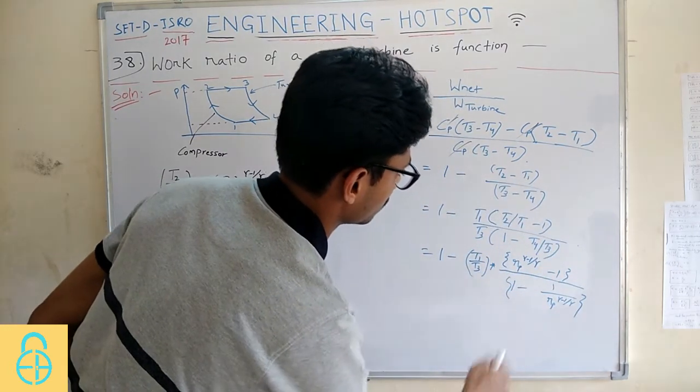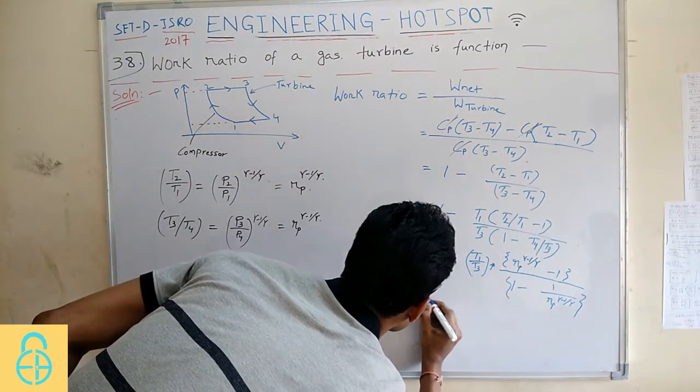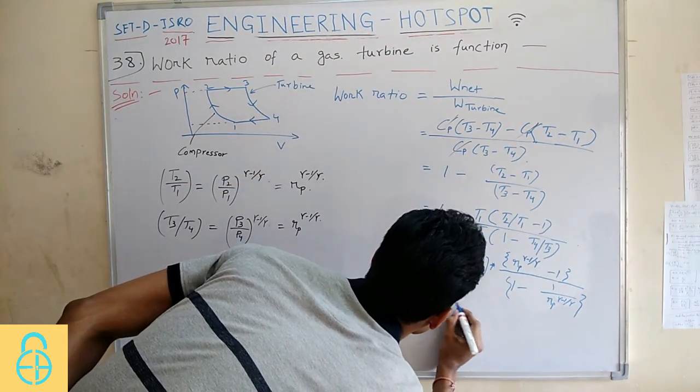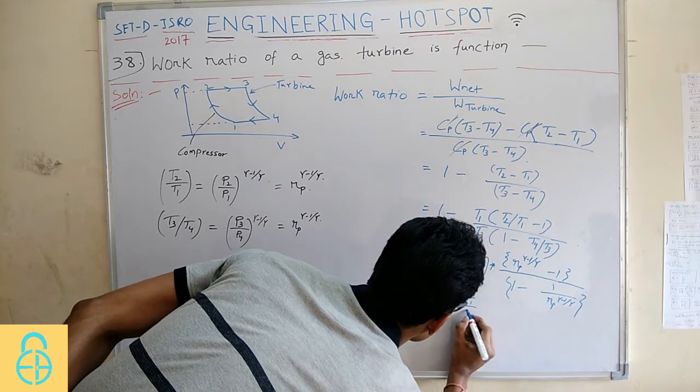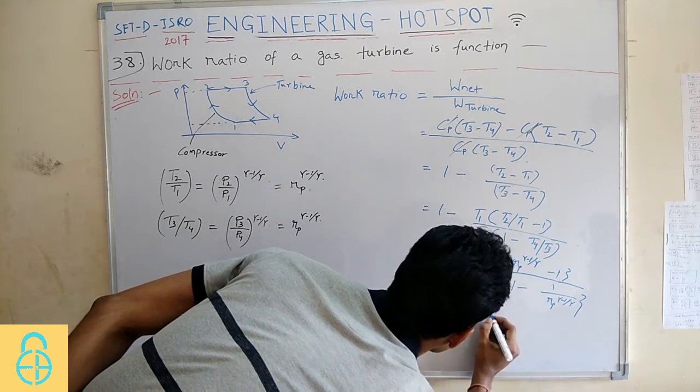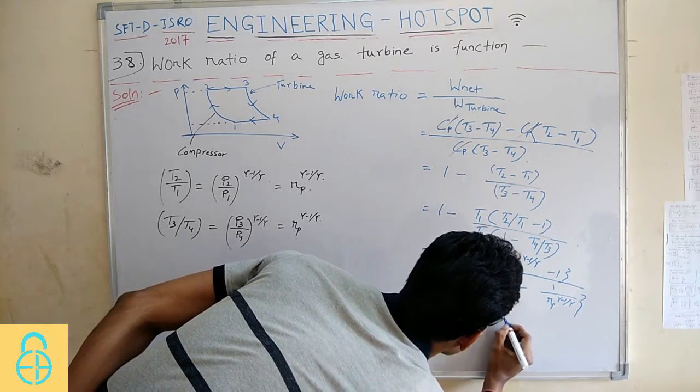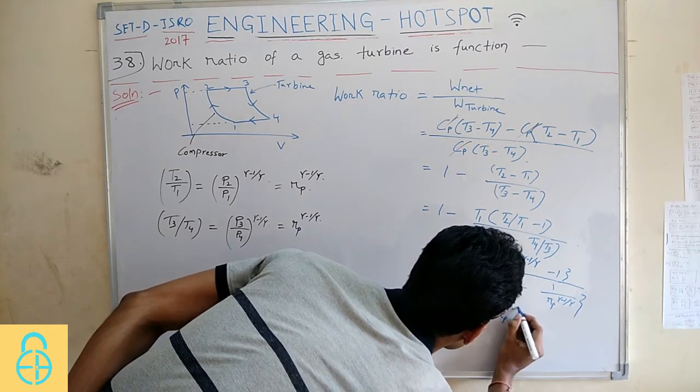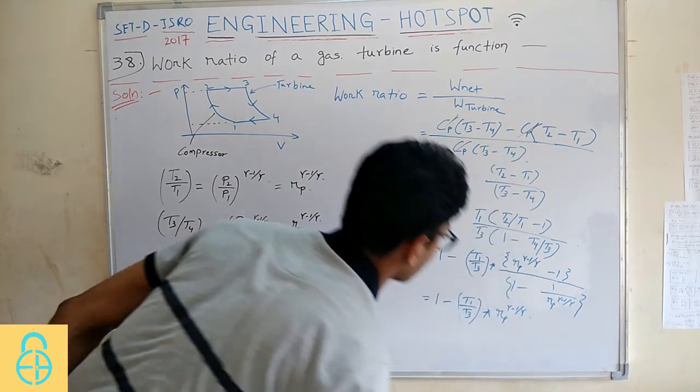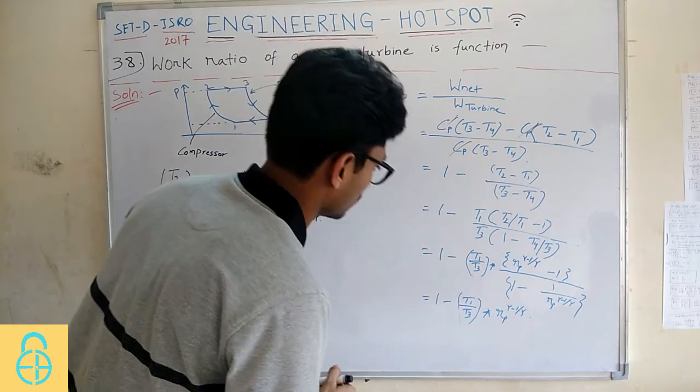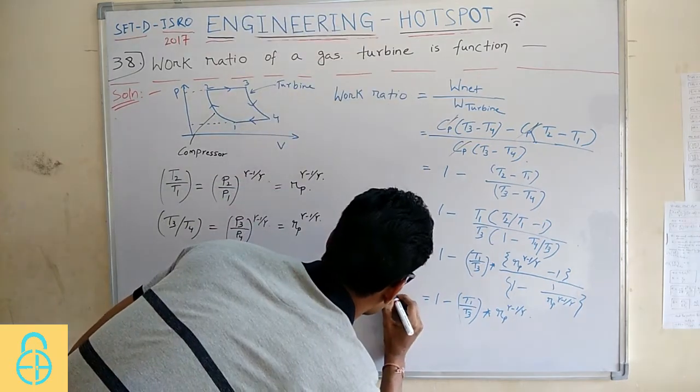This is the final expression for work ratio. If you take the LCM and take that in the numerator, you will get 1 minus T1 by T3 into Rp to the power gamma minus 1 by gamma. This is the final expression for work ratio.